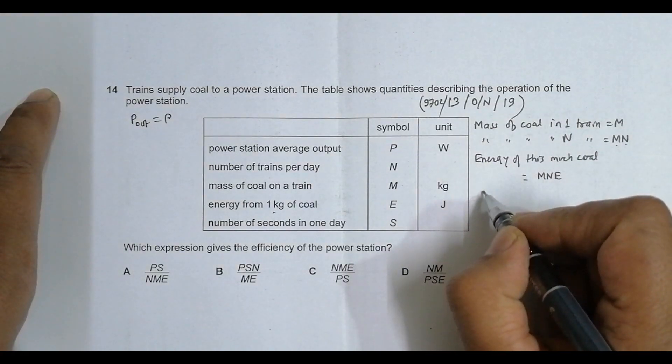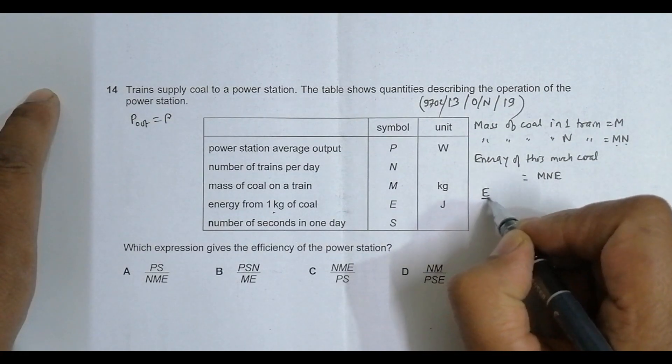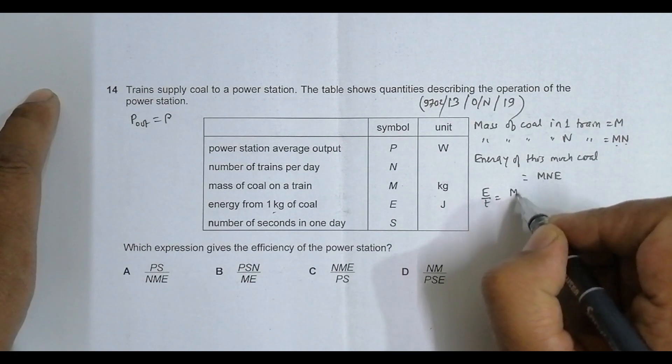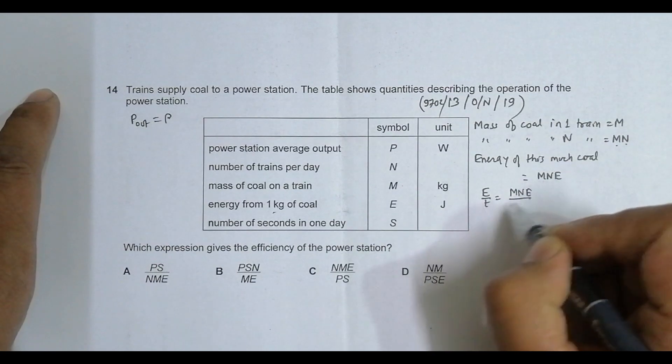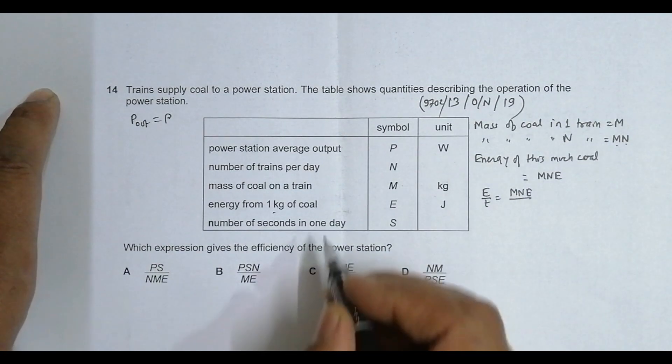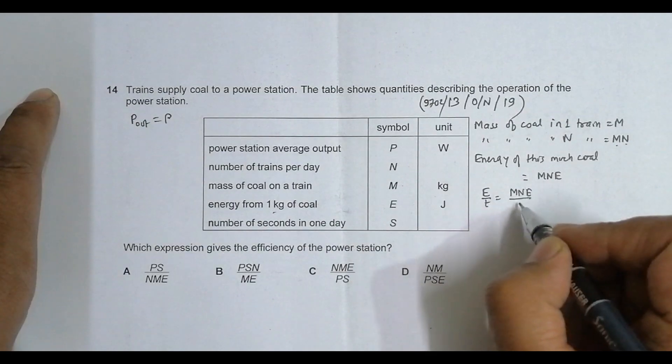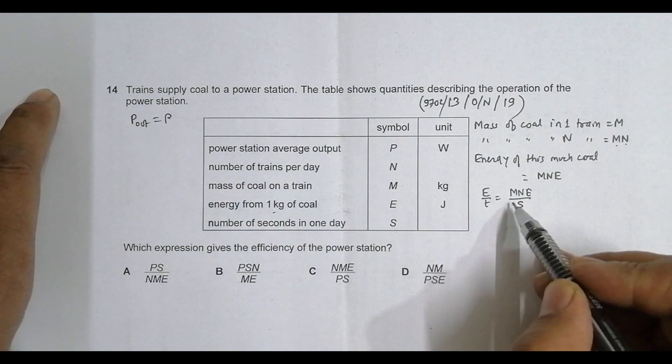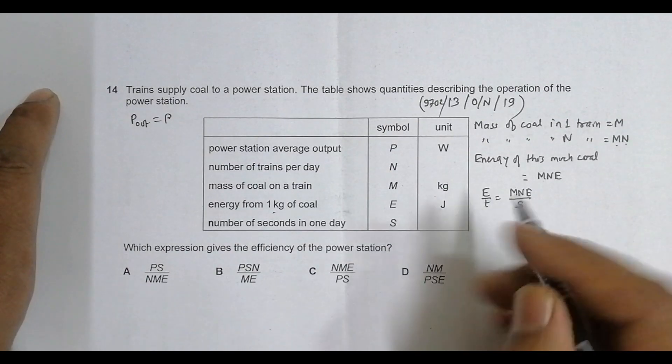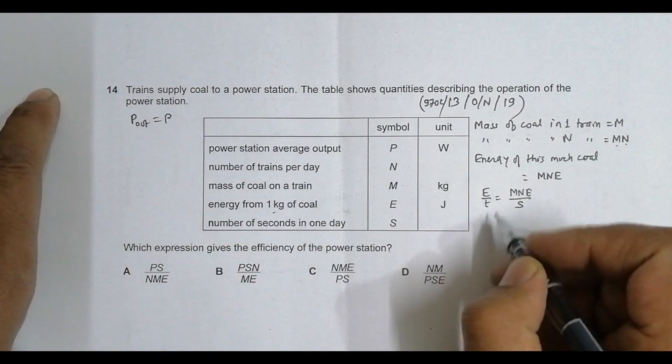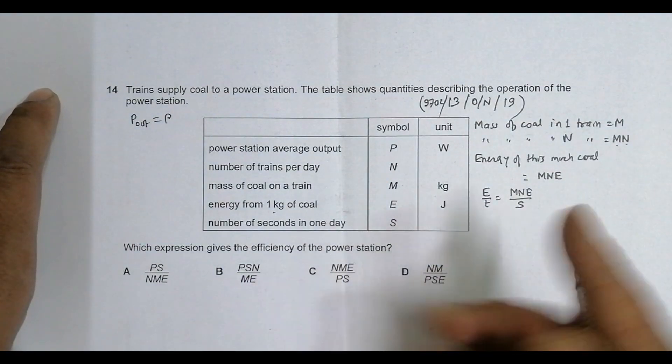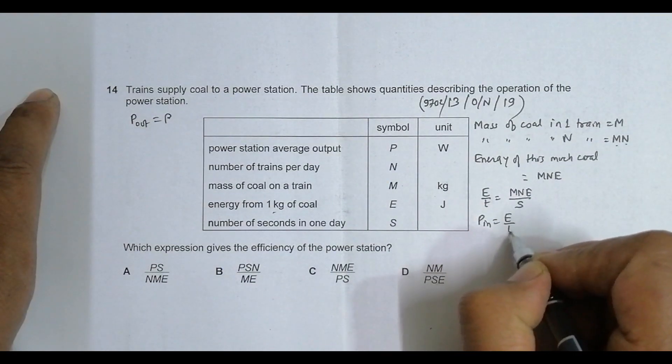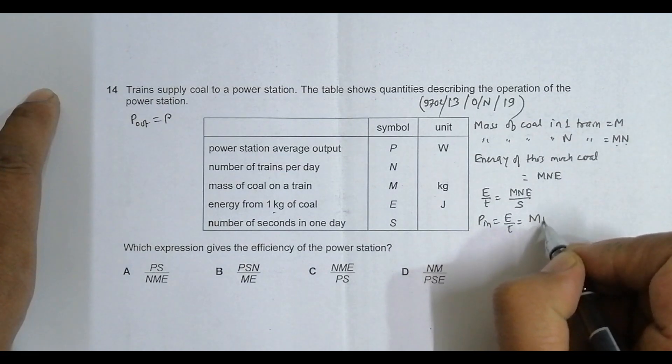That means the rate of transformation of energy is energy divided by time. The energy is MNE and this happens in one day, which is S seconds. So energy by time equals MNE by S. This is the power input.